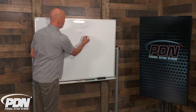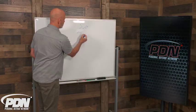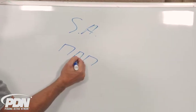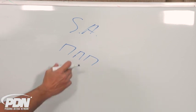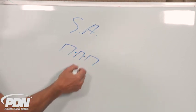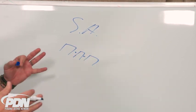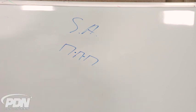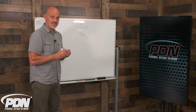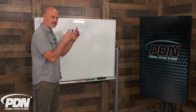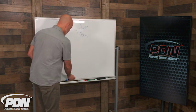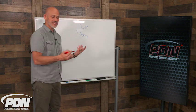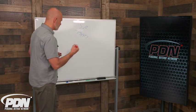Sight alignment is the relationship between the front and rear sight on your pistol, rifle, or any firearm. What we're looking for is equal amounts of light on either side of that front sight post inside the notch of the rear sight, and that the sights are even across the top. That gives us an alignment of the gun along what we're looking at — which is the threat.